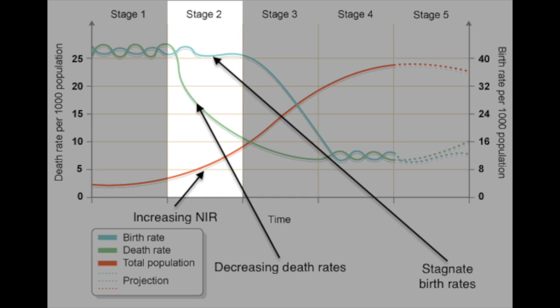Now let's take a look at stage two of the demographic transition model. When we look at the graphic, we can immediately see that birth rates and death rates separate massively during this time. Stage two has the highest growth rate, and because of that, the natural increase rate is going to start increasing at a dramatic rate.